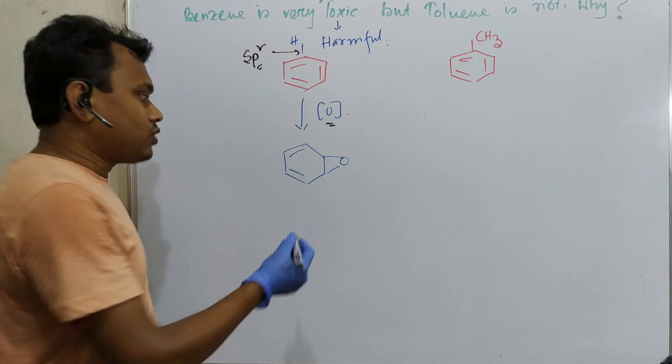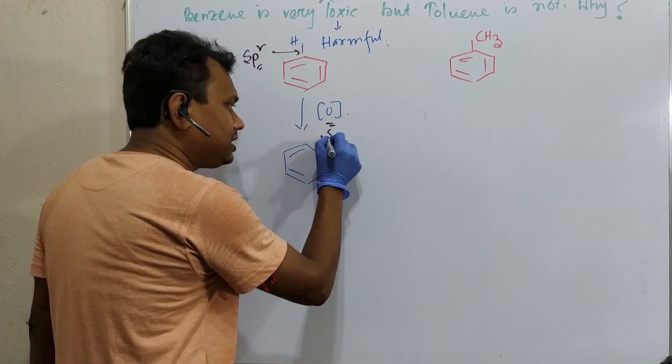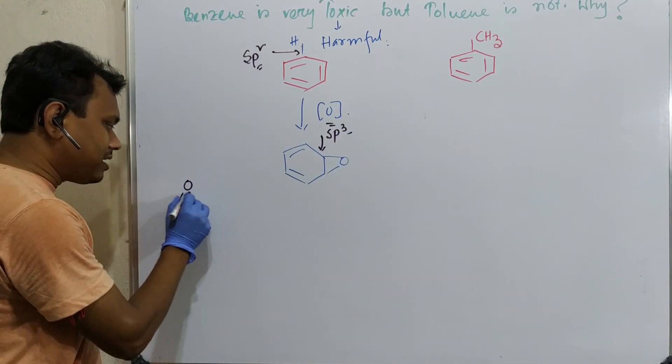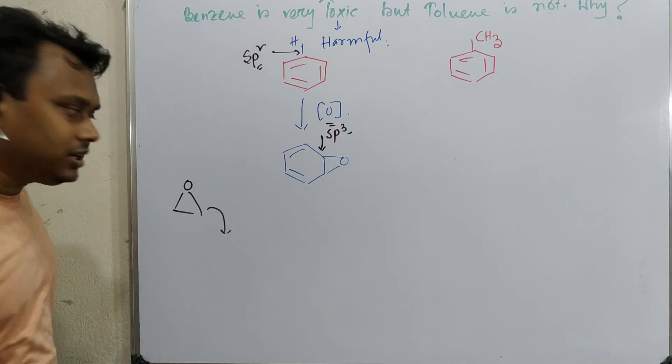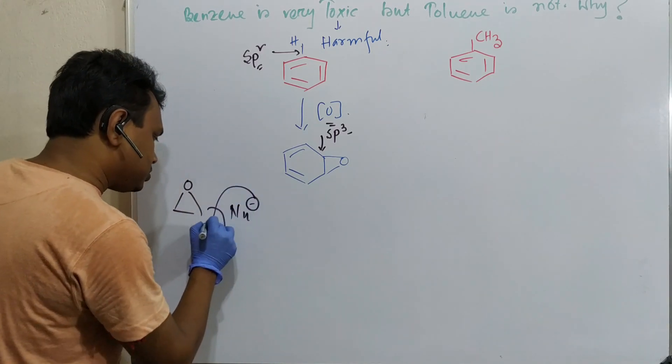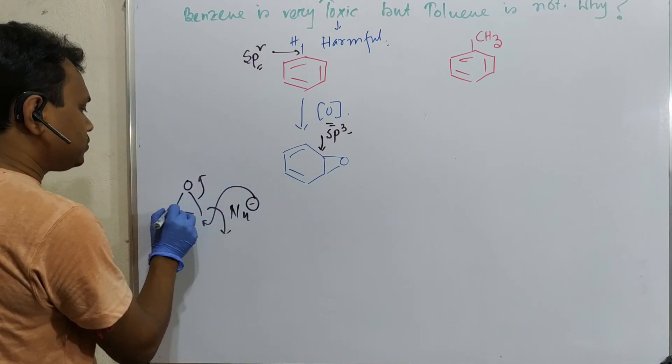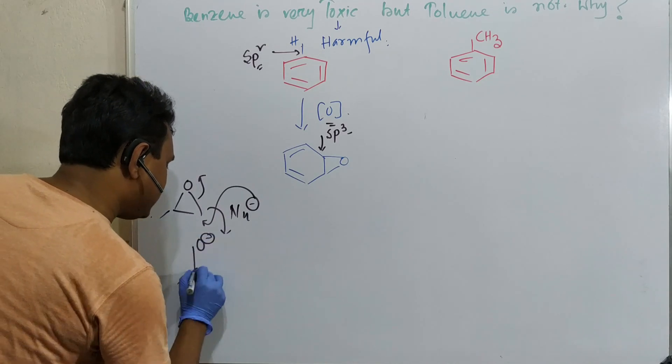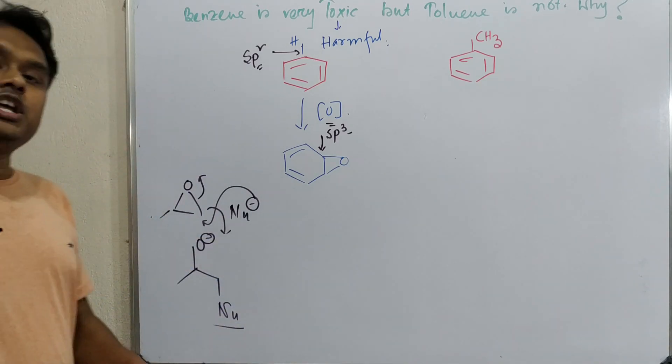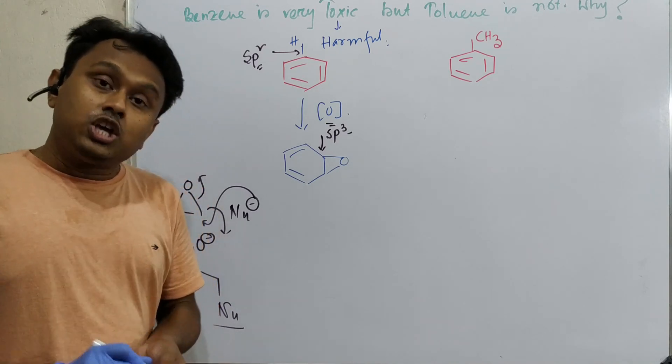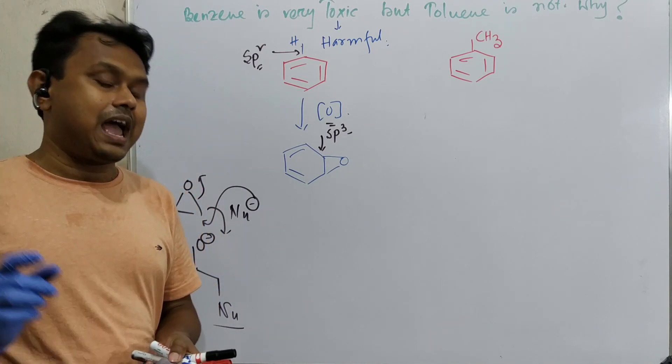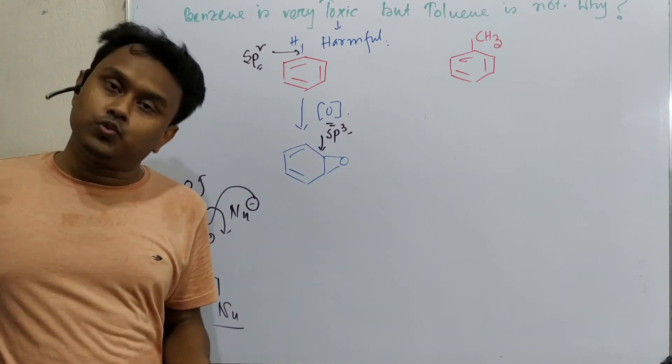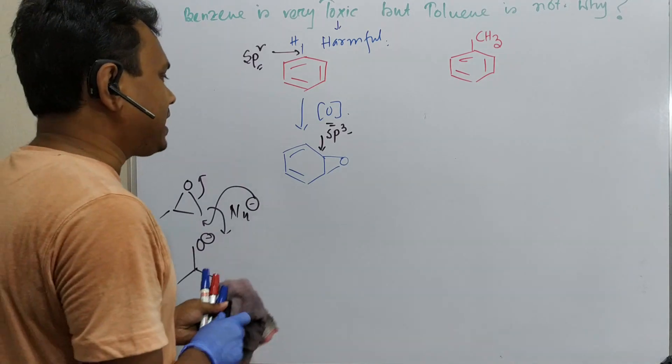After epoxidation, you see there is actually sp3 carbon and we know that these epoxides can undergo ring opening by different nucleophiles. This oxygen minus is nucleophile. By the way, I have already uploaded lectures on epoxide ring opening under neutral, acidic, and alkaline medium. Neutral means Lewis acid mediated. For further details, you can visit that video.